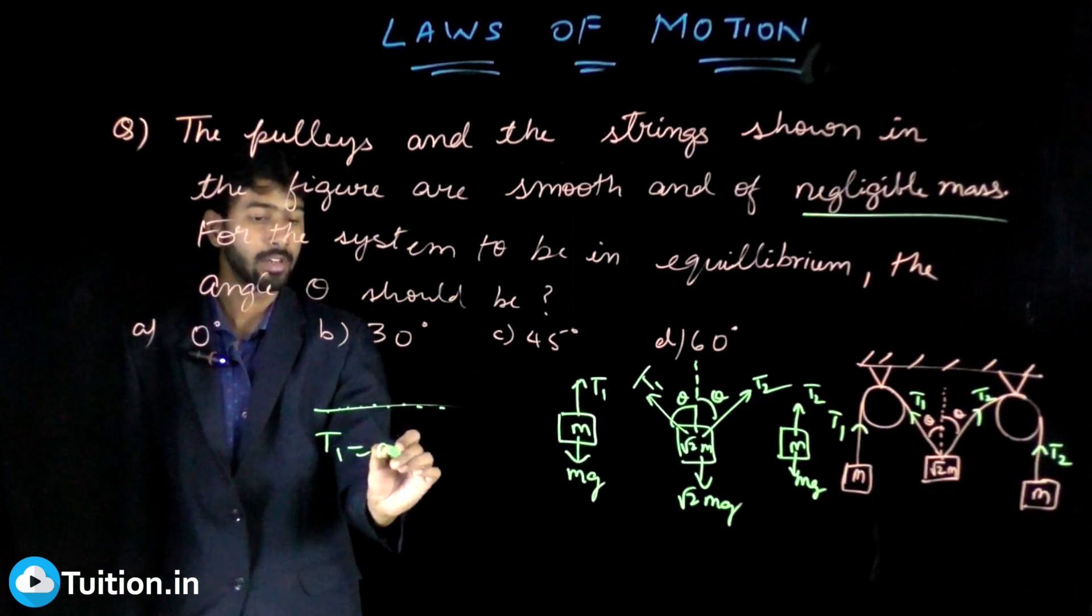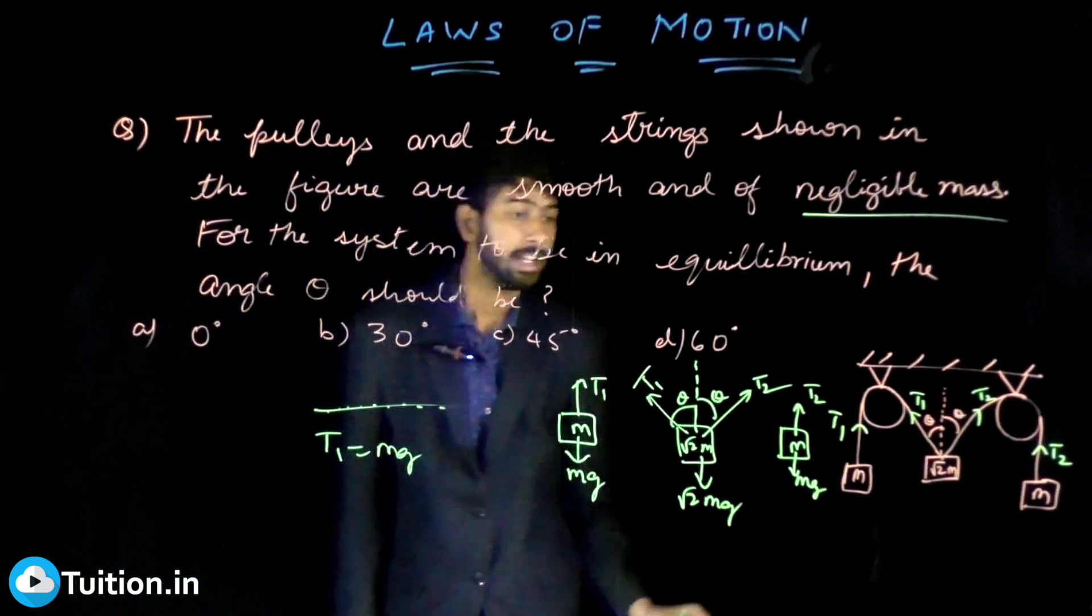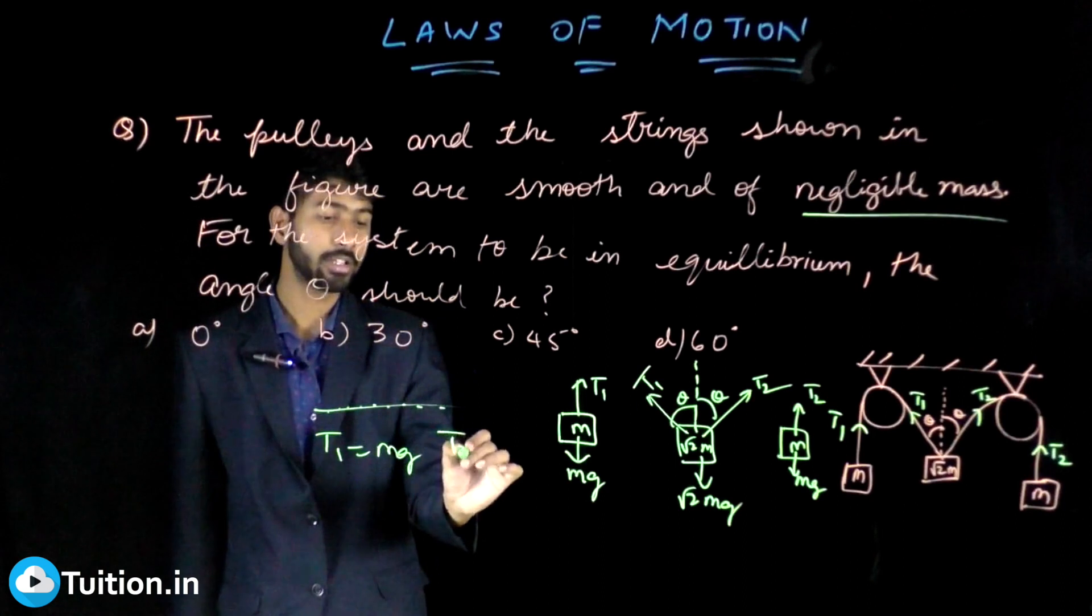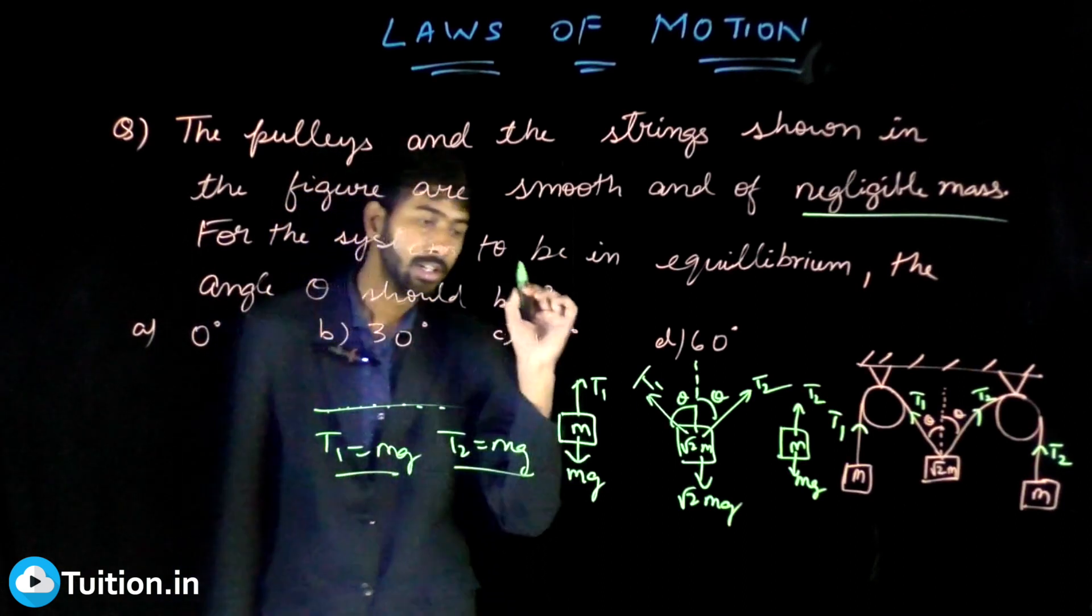Similarly, T2 for the third body also has to be mg only then the body will be at rest. So I got these conditions. In fact, I got that T1 equals T2.